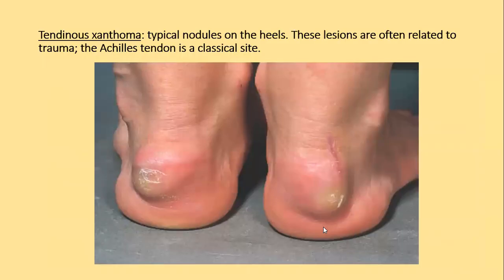The xanthomas contain collagen in addition to the foamy histiocytes, and so feel quite hard. This is how a typical tendinous xanthoma looks at the Achilles tendon.